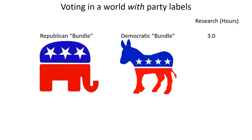Now, if this person does the research and they don't have a preference — if they like an equal number of things and dislike an equal number of things in each of the bundles — they're basically voting in a world without party labels and they're going to have to make each of their decisions independently.